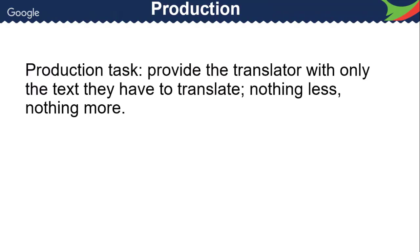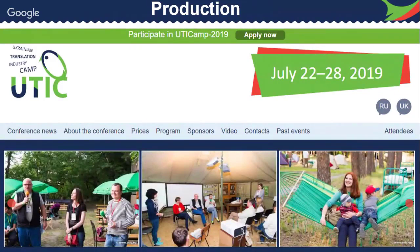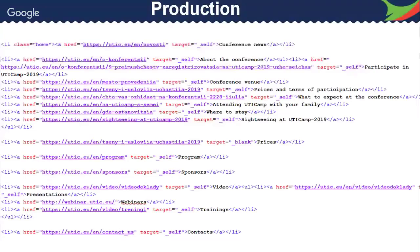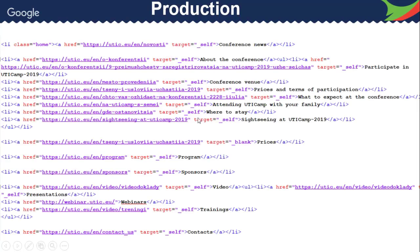Here's what we do day to day. Our task in production — what we do every day to make clients happy — is to provide the translator with only the text they have to translate, nothing less, nothing more, and make sure the client receives something that looks as good as possible. Take the example of the UTIC conference website: it looks really nice in the browser, structured, with pictures. But in fact what the browser really sees is just a bunch of HTML text.